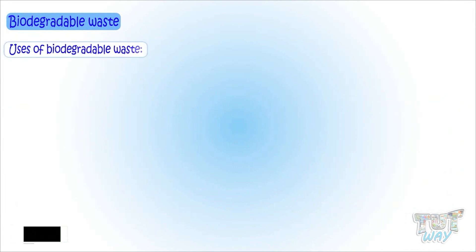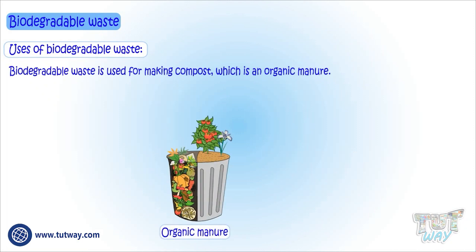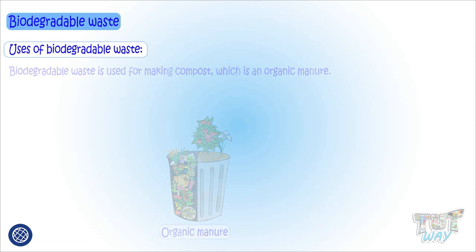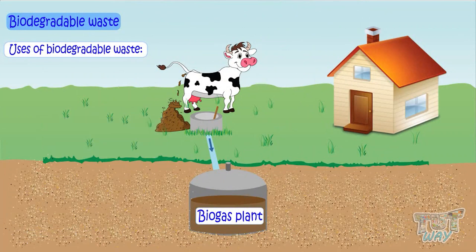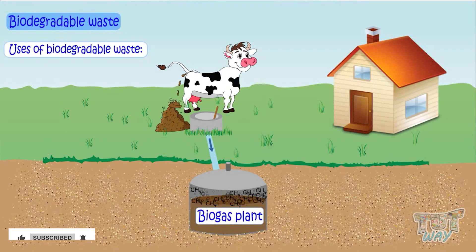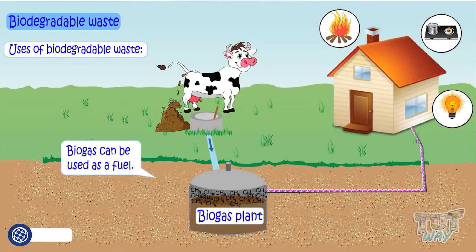Biodegradable waste can be used in many ways. It can be used for making compost, which is an organic manure. It is also used for making biogas, a source of energy. In the absence of oxygen, biodegradable waste decays and produces methane gas, which is used as fuel through various biogas plants. This biogas can be used as a normal fuel for heating, cooking, and even generating electricity.